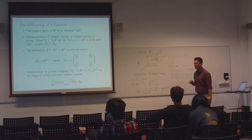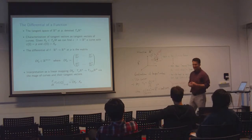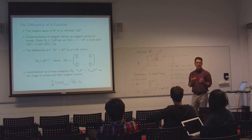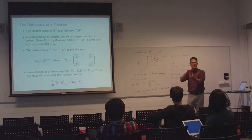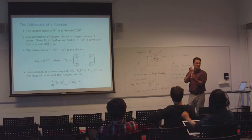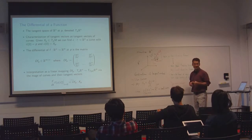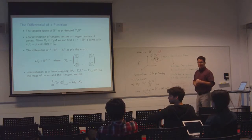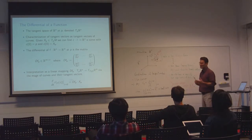If you take the union of all possible tangent spaces, you get a six-dimensional object: three dimensions for the choice of base point P, and another three dimensions for the span of vectors inside that tangent space. This union of all possible tangent spaces has a name — it's called the tangent bundle of R³.